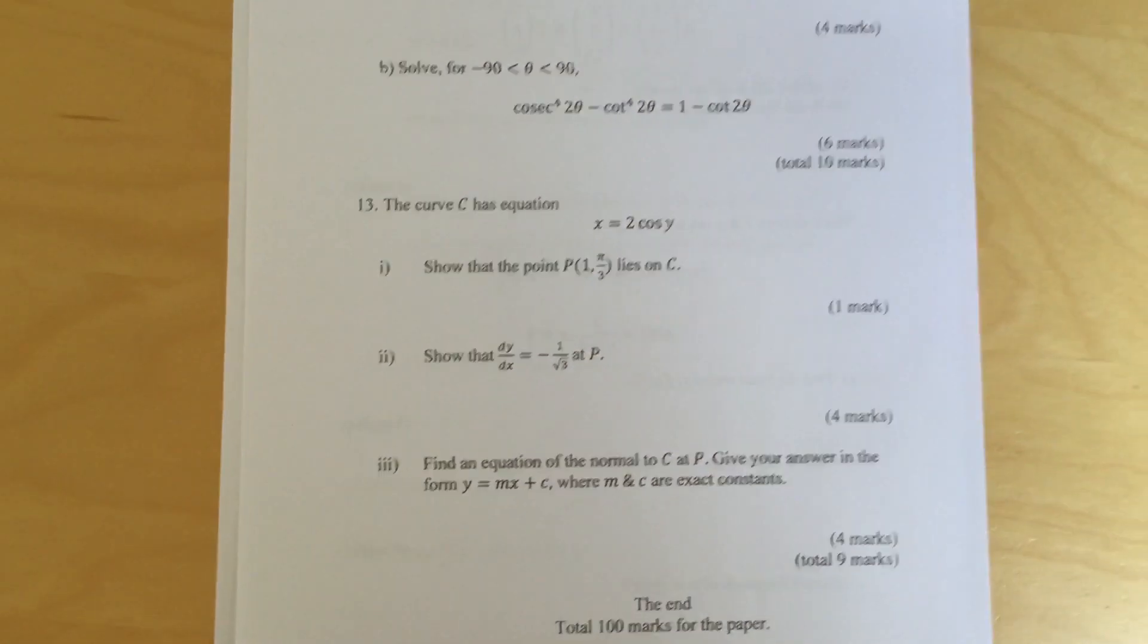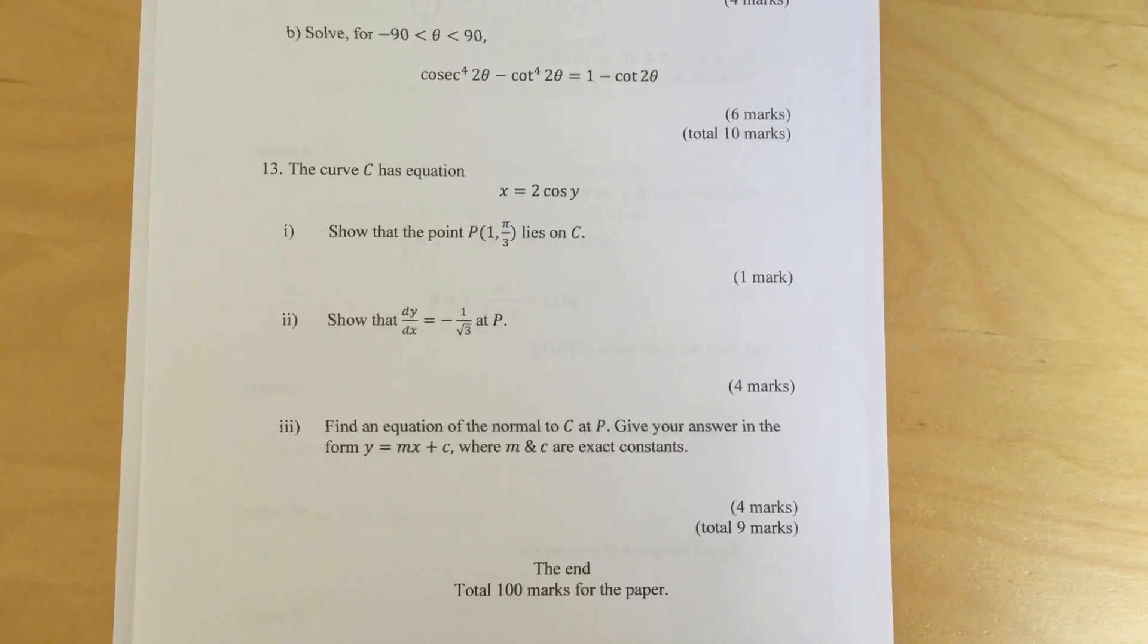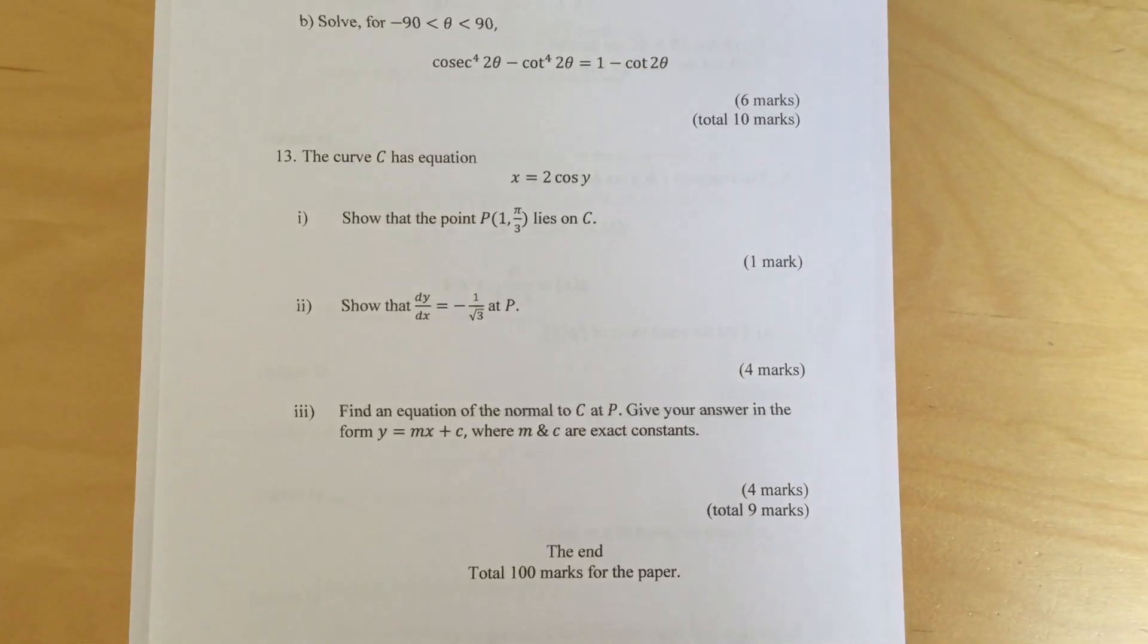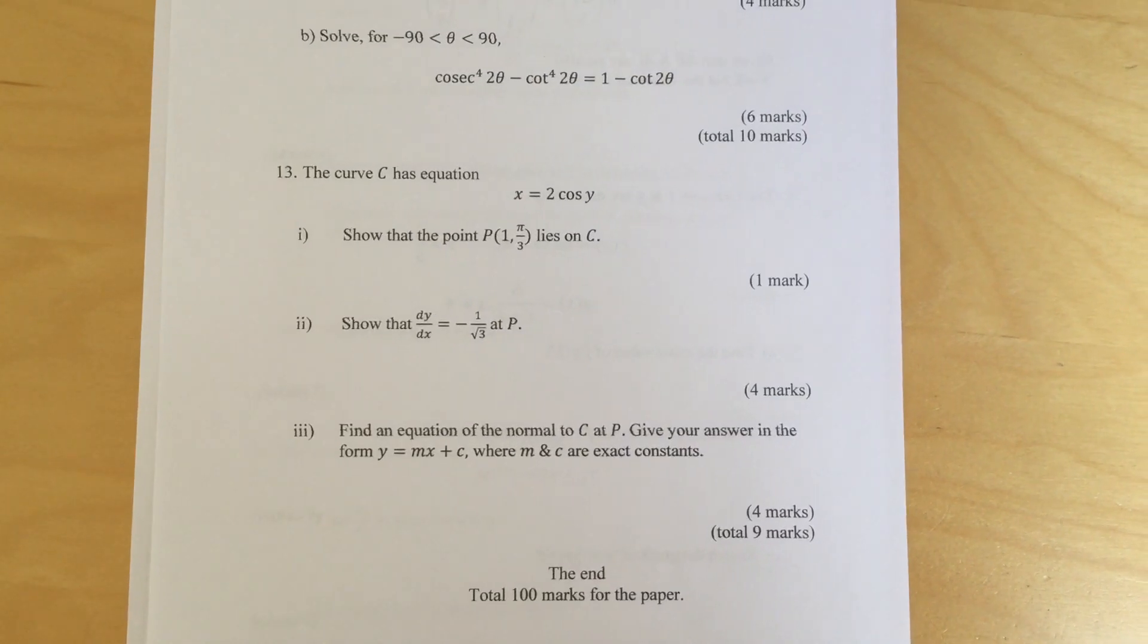Question 13: The curve c has equation x equals 2 cos y. Show that the point p, 1 comma pi over 3, lies on c.